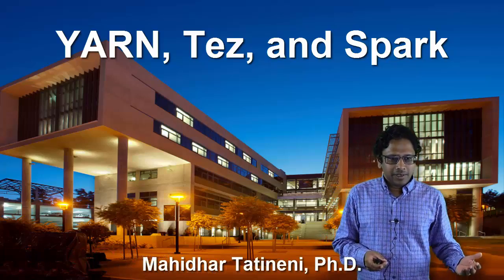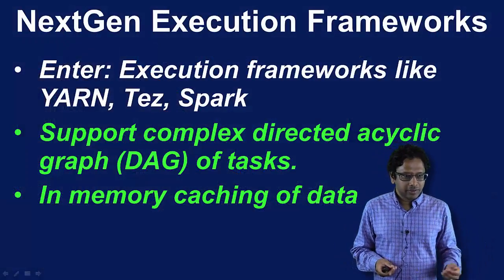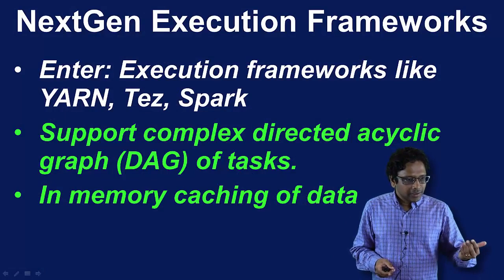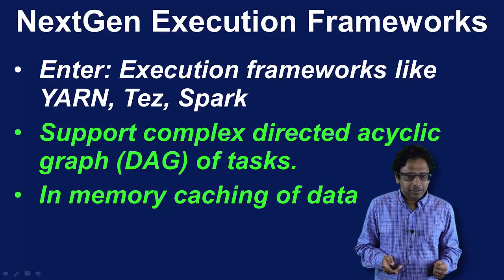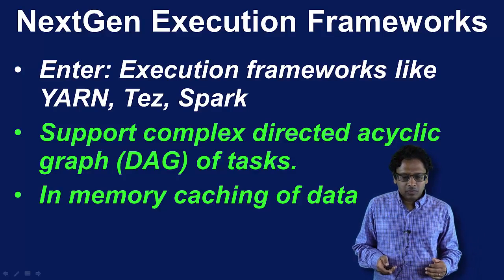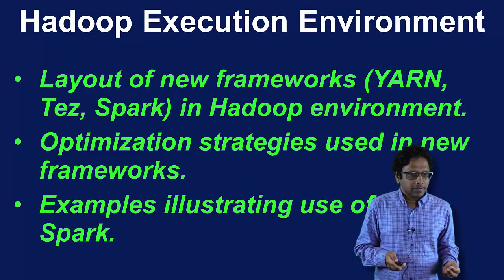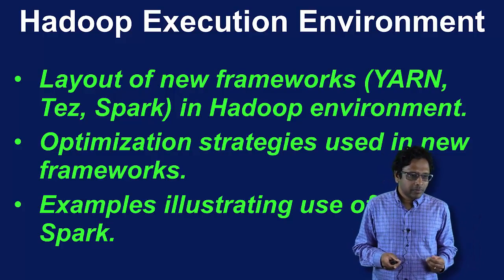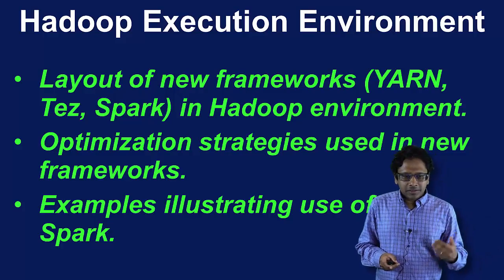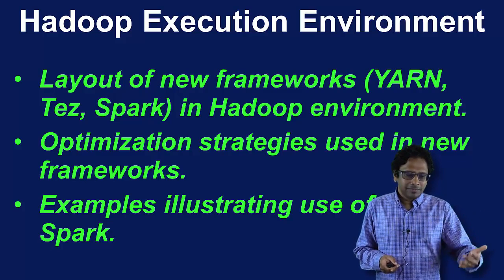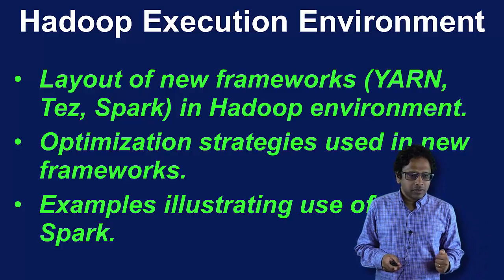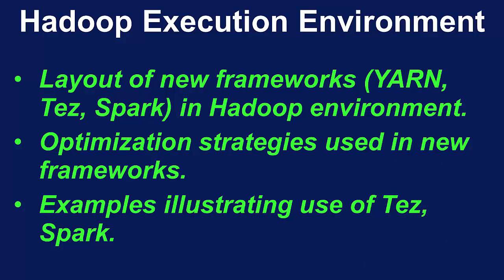Welcome back. In the previous video we talked about the newer execution frameworks like YARN, TEZ, and Spark, and how they let you do a more complex acyclic graph of tasks and use features like memory caching of data. In this video, we're going to look at the layout of some of these new frameworks, how they fit into the Hadoop environment, and some of the optimization strategies they've been using. We'll use upcoming modules for more detail, especially for Spark, and look at examples in TEZ and Spark to show how things get better by using these frameworks.